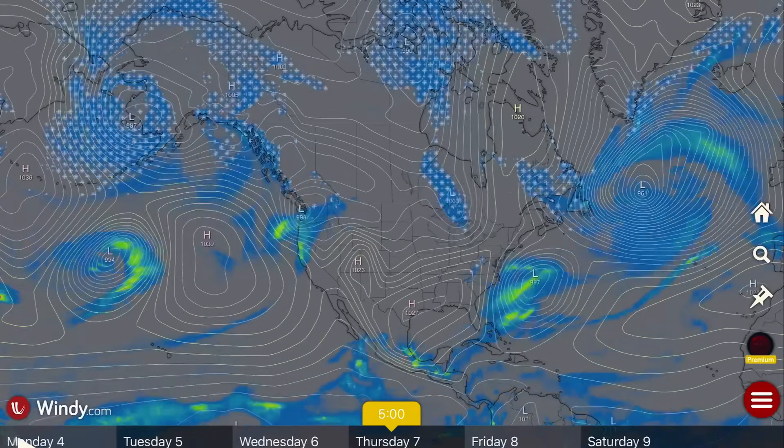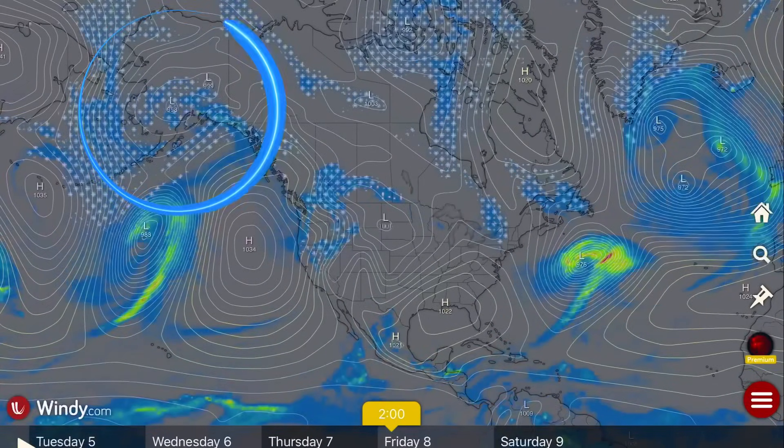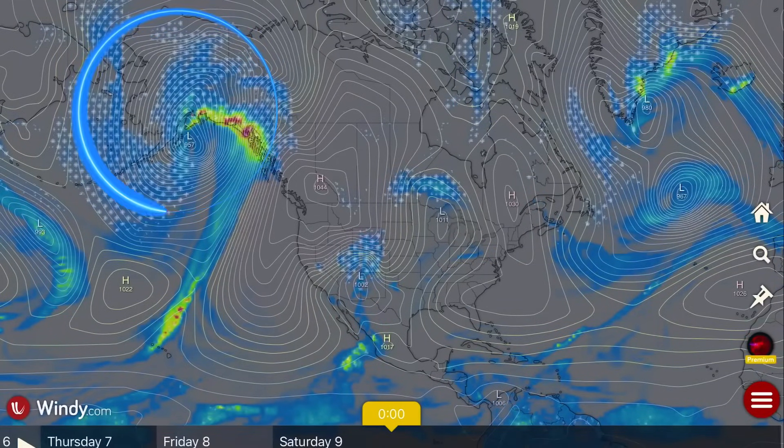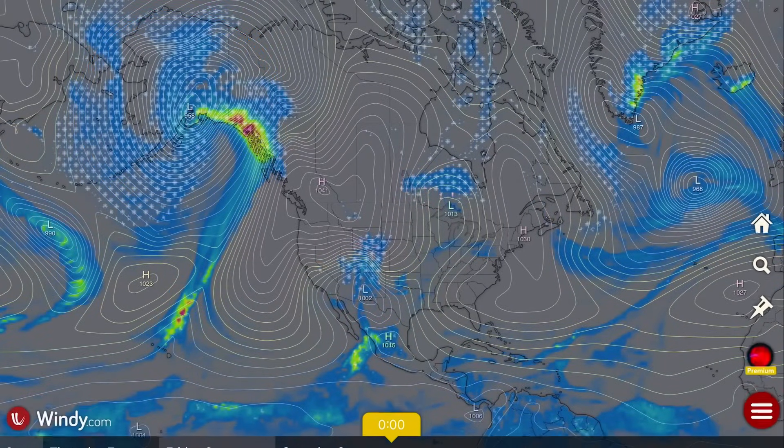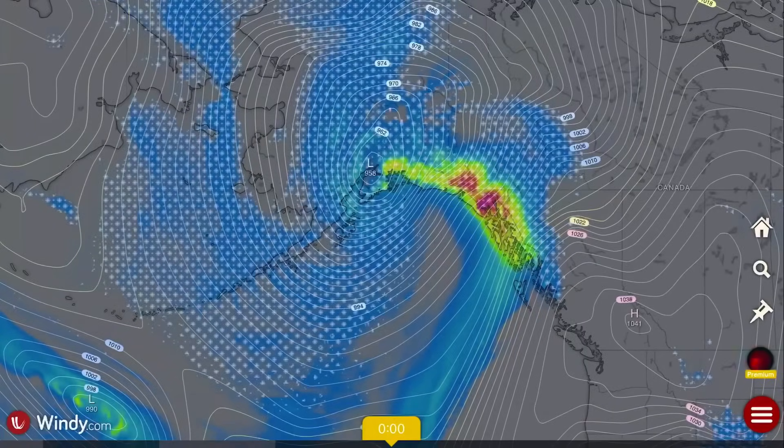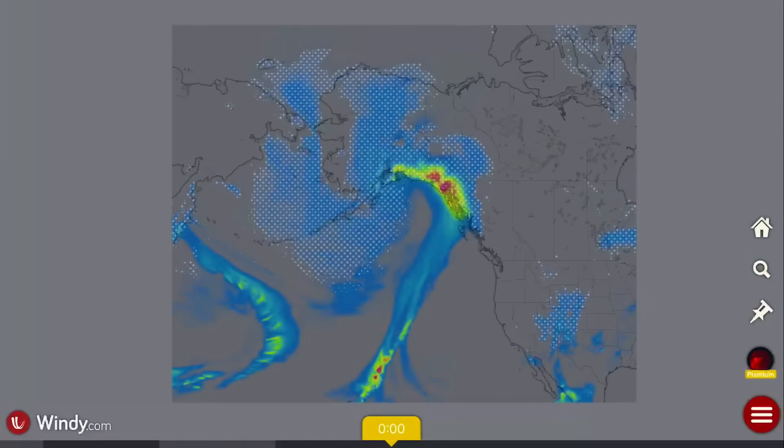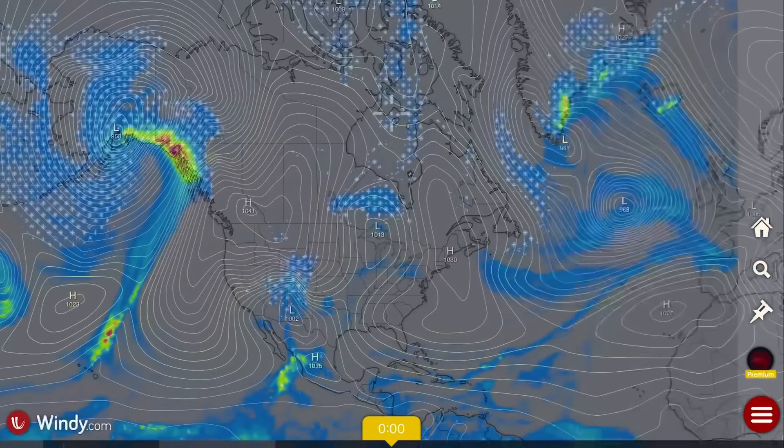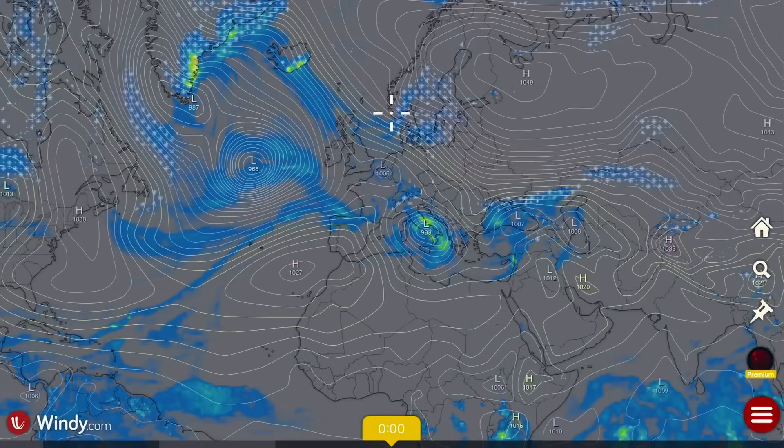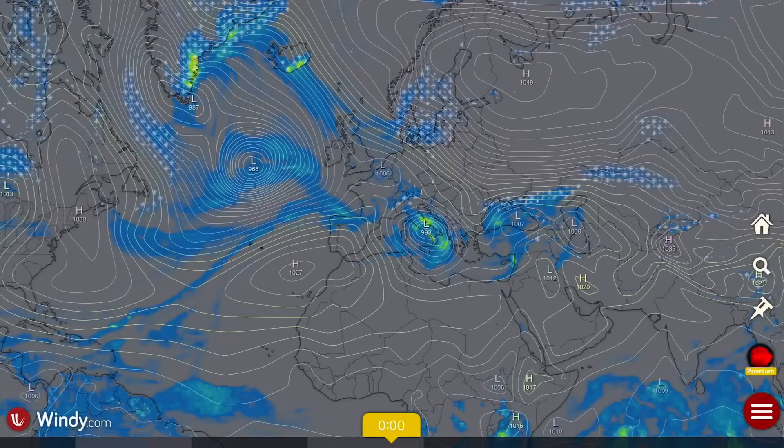Strong low coming into Washington, 6th into the 7th. And then watch this big system ramp up, very organized low here heading towards Alaska. Very tight isobars, so extreme winds. Extreme blizzard conditions I'm sure will be prevalent across Alaska and northern BC.